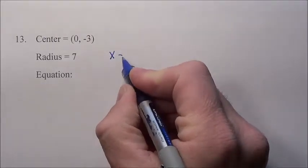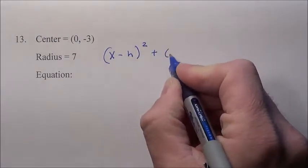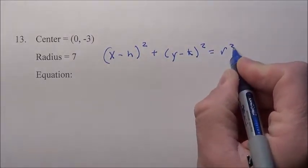Well, if we remember our formula, it's x minus h squared plus y minus our k value squared is equal to our radius value squared.